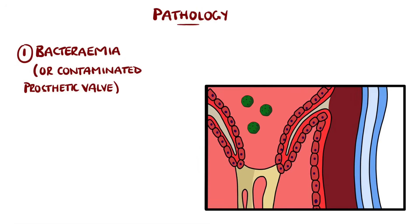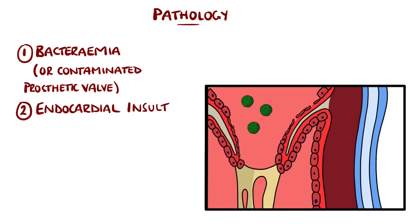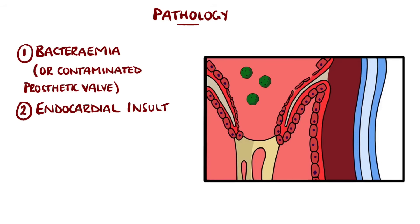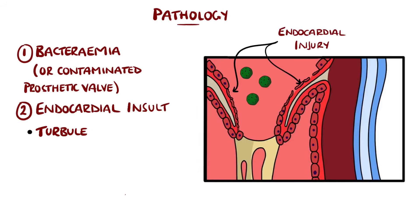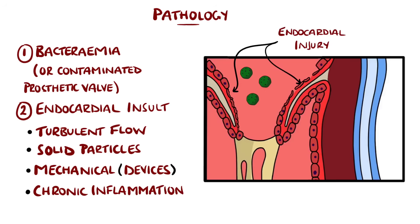However, the endocardium is normally resistant to colonisation by microorganisms. Therefore, for infectious endocarditis to develop, there also needs to be an injury to the endocardium. This could come from turbulent blood flow, direct injury from solid particles injected during intravenous drug use, mechanical injury from devices, and chronic inflammation, such as in autoimmune conditions.